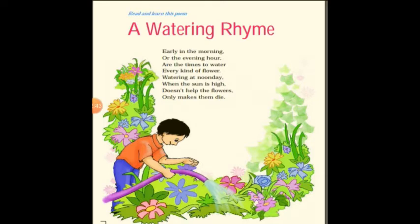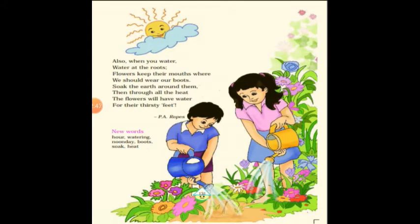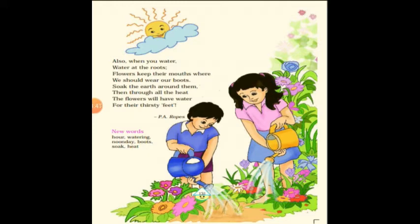The second stanza reads: 'When you water, water all the roots. Flowers keep their mouths where we should wear our boots. Soak — soak means to wet — the earth around them, then through all the heat the flowers will have water put for their thirsty feet.' The poet is telling us to water the plants at the proper rooting depth, so the soil becomes wet. The root is like the mouth of the plant — just as we need our mouth to eat food, the root is how the plant absorbs water.